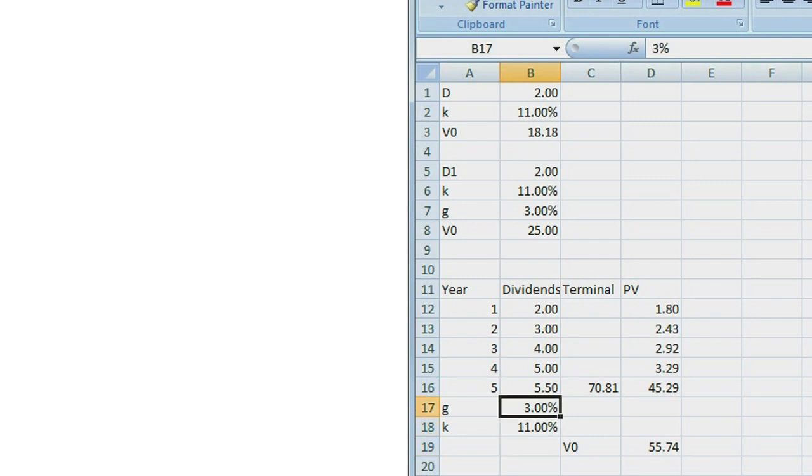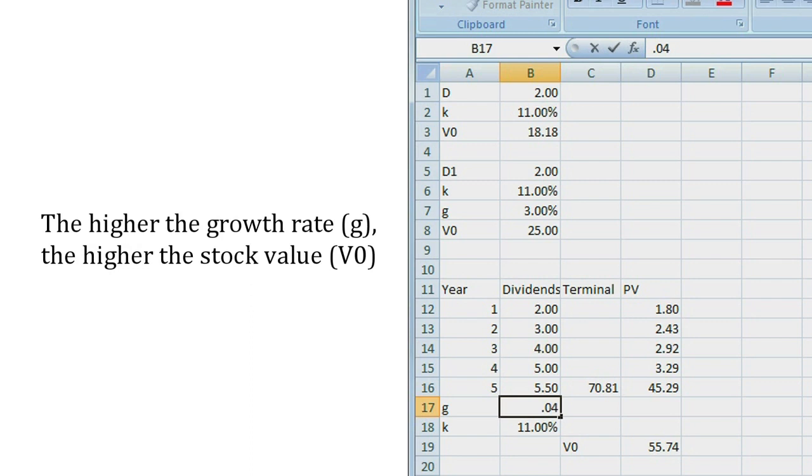Now what happens if this company's dividends grow faster over the long term? So instead of 3%, what if we assume 4%? We should be willing to pay more for that stock because in essence its cash flows are going to be higher in the future and you see the value of the stock go from $55 to $62. An increase which again makes intuitive sense.